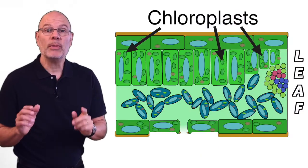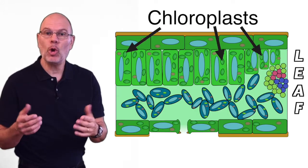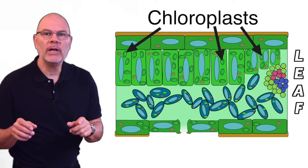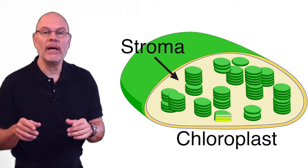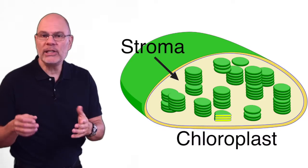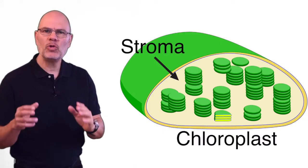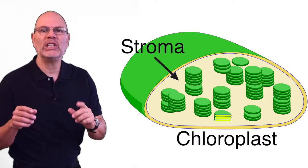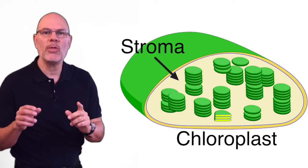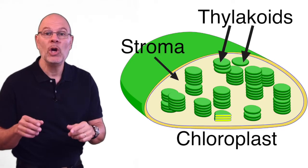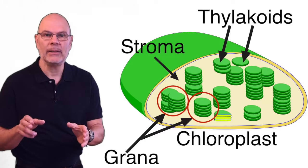Photosynthesis occurs in plant cells in organelles called chloroplasts. The inner fluid of the chloroplast is called the stroma. It's equivalent to the cytosol of a eukaryotic cell. The stroma surrounds these little membrane-bound sacs called thylakoids, which are organized into stacks called grana.